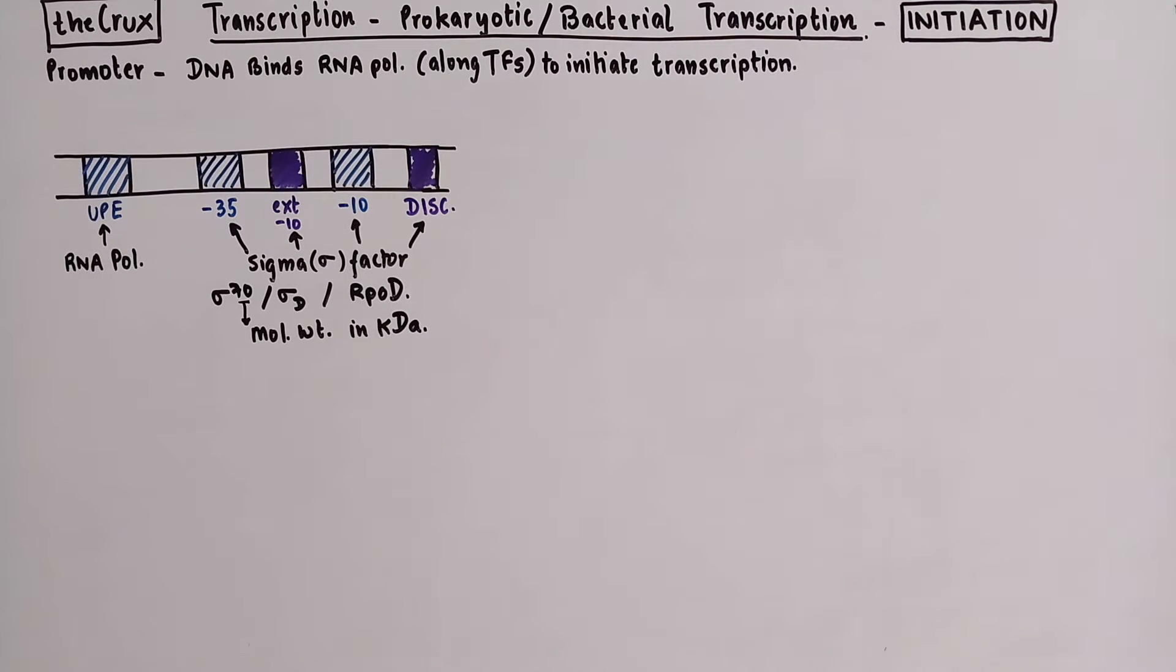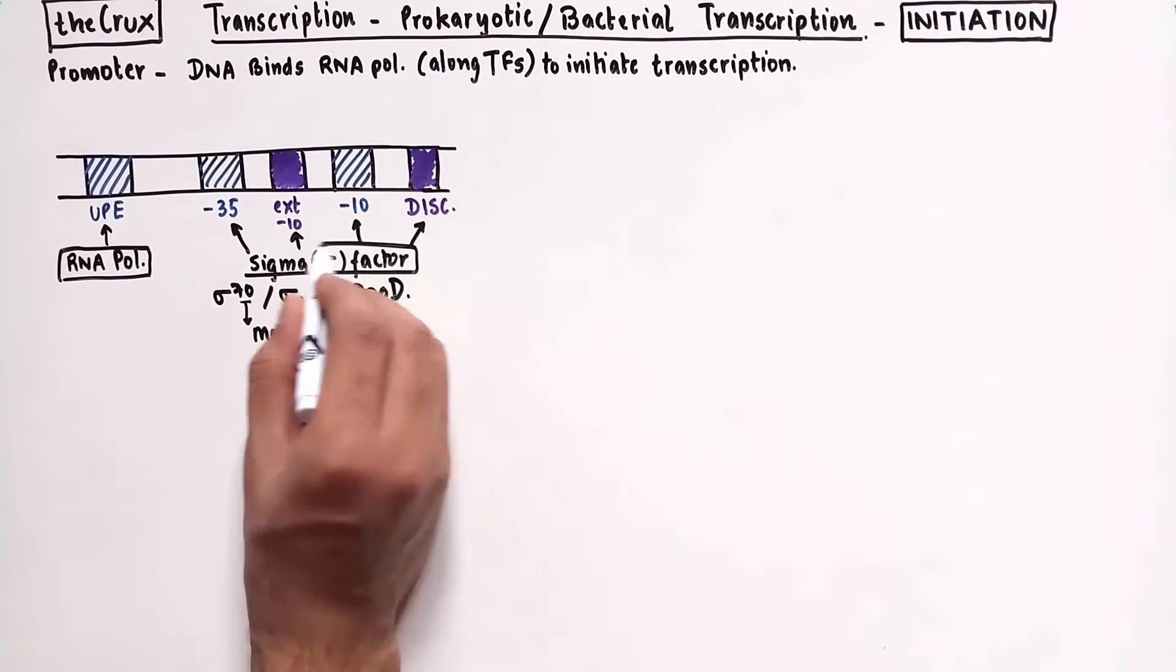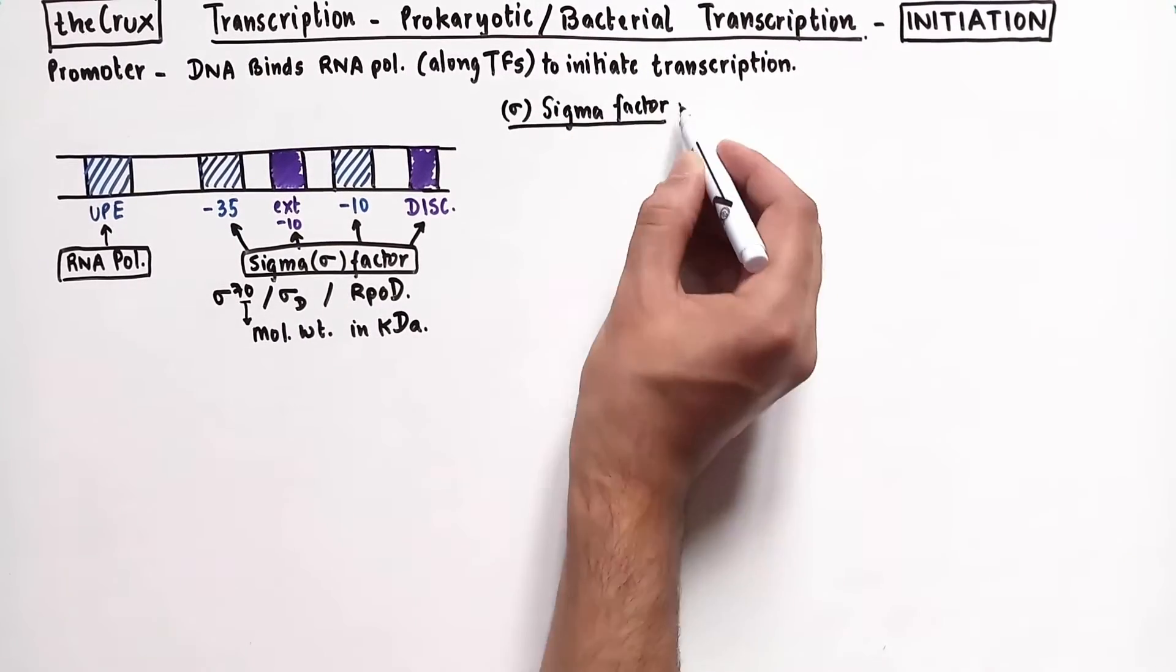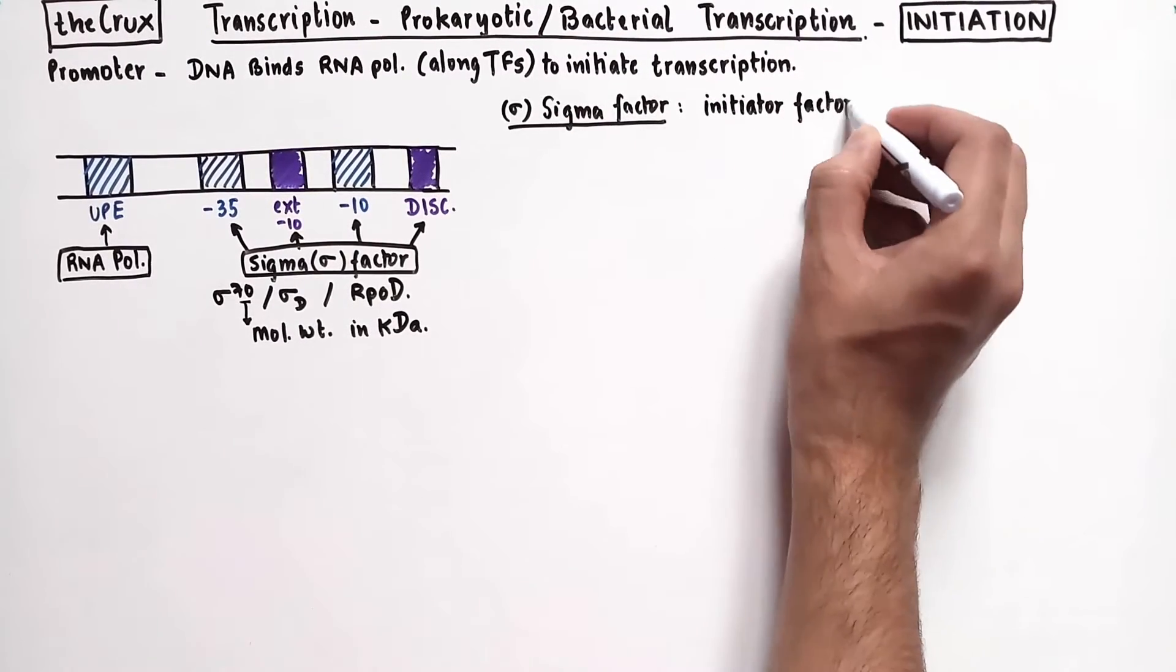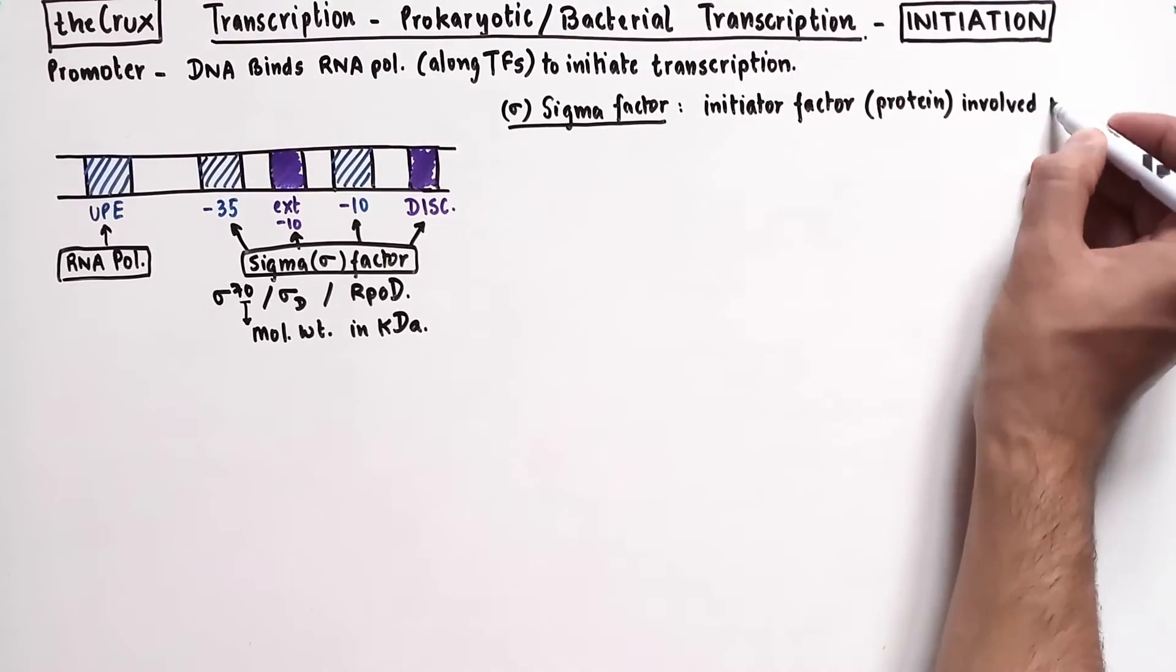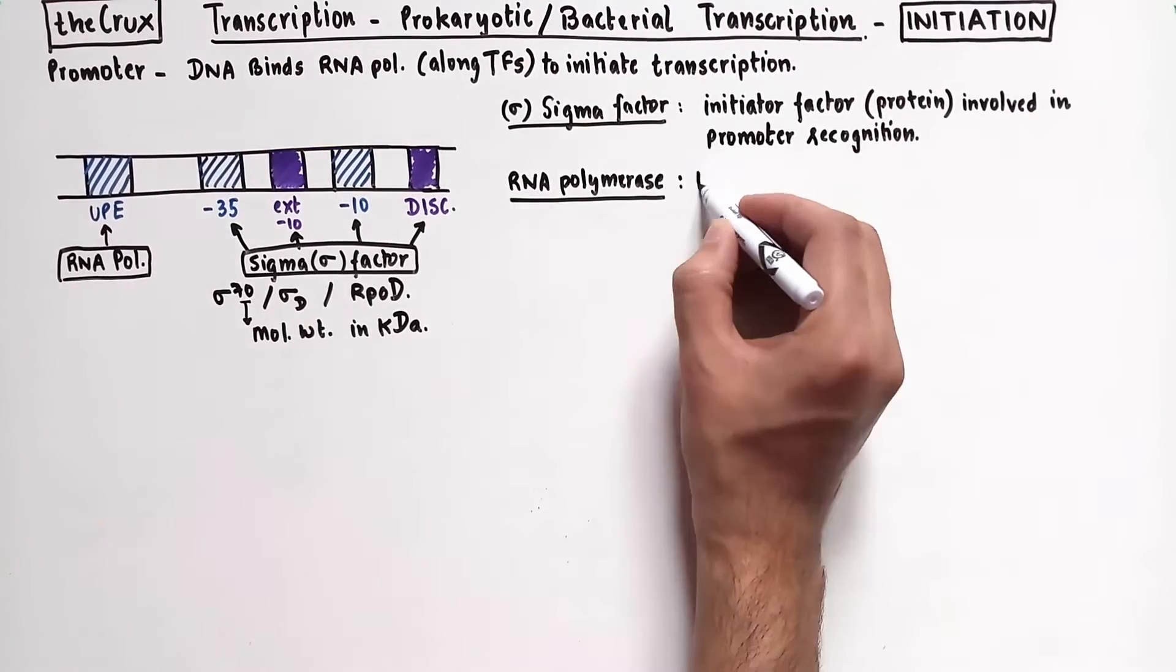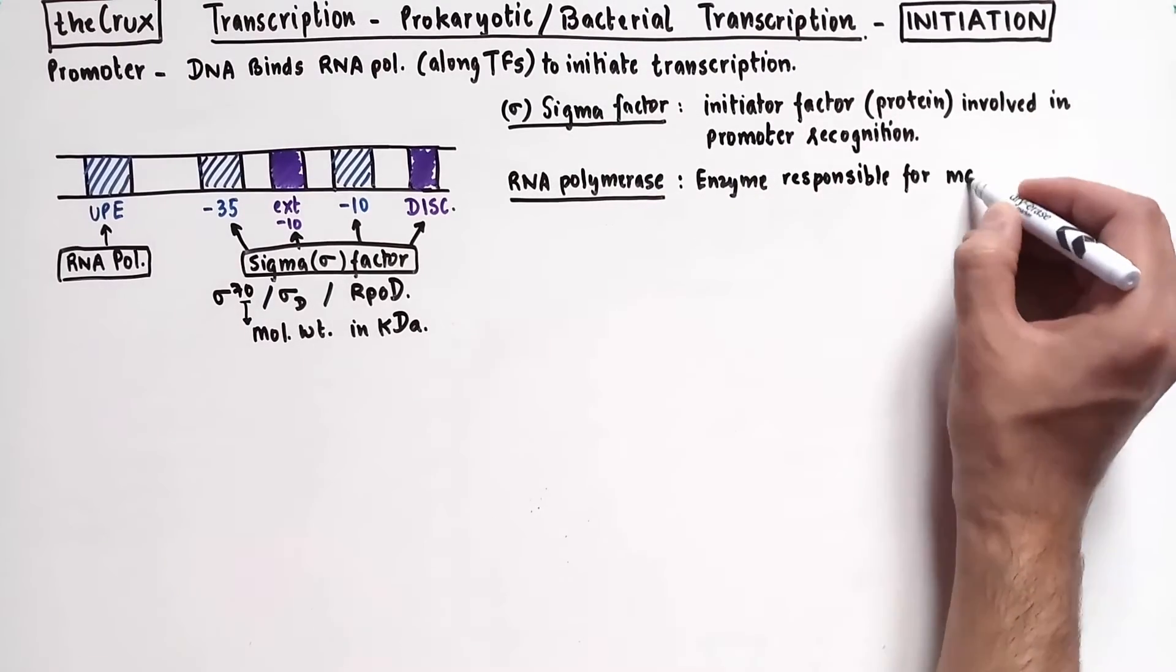Now before we dive into initiation, let's get a quick introductory look at the polymerase and the sigma factor. So sigma factor is an initiator or initiation factor that has the ability to recognize promoters. And RNA polymerase is the enzyme responsible for synthesizing the RNA.